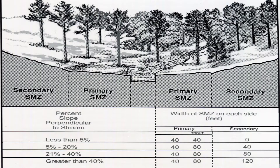The SMZ for perennial and intermittent streams is divided into two parts: the primary zone and the secondary zone. The primary zone is 40 feet wide on each side of the stream, measured from the bank. Trout waters with greater than 5% slope have a primary zone of 80 feet. The secondary zone may vary from 0 to 120 feet depending on the steepness of the slopes perpendicular to the stream. Ephemeral streams do not have a designated SMZ, but there are other BMPs for their protection.